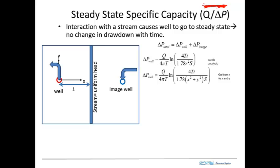The steady-state specific capacity is a very important value because for a reasonable range of drawdowns it remains constant. If we know it, we can determine what the drawdown will be for a specific pumping rate. This is probably the best way to characterize well performance. For example, if there is a maximum drawdown you cannot exceed, you can determine the corresponding maximum pumping rate using the specific capacity.